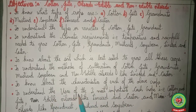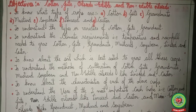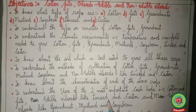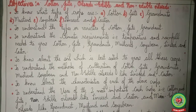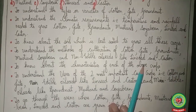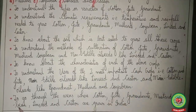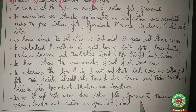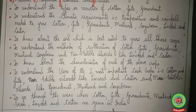We understood the uses of the two most important cash crops — cotton and jute — non-edible oil seeds like linseed and kester, and main edible oil seeds like groundnut, mustard and soya bean. We also covered the areas in India where cotton, jute, groundnuts, mustard, soya bean, linseed and kester are grown.